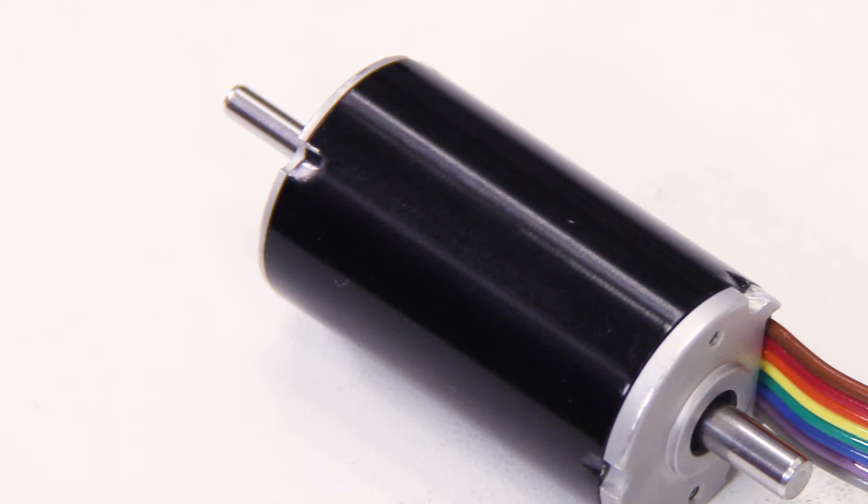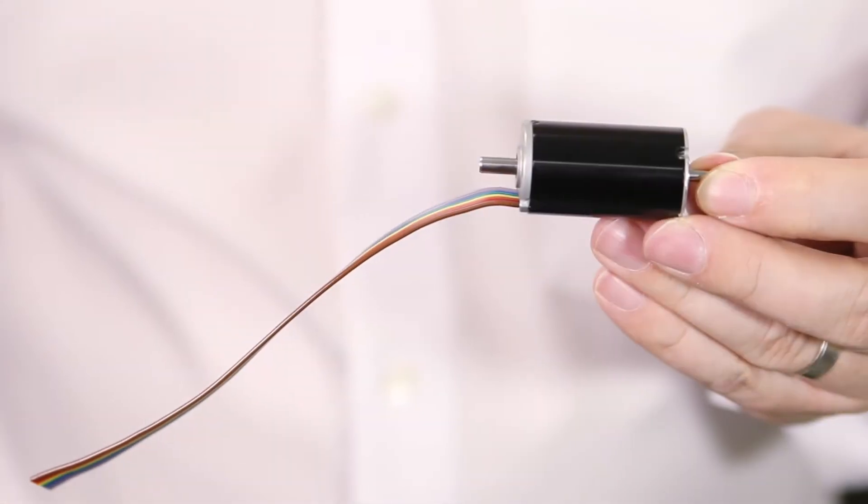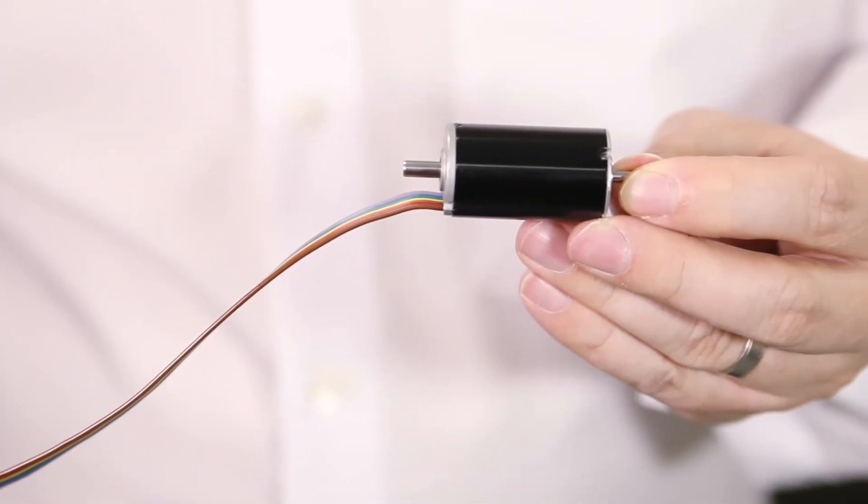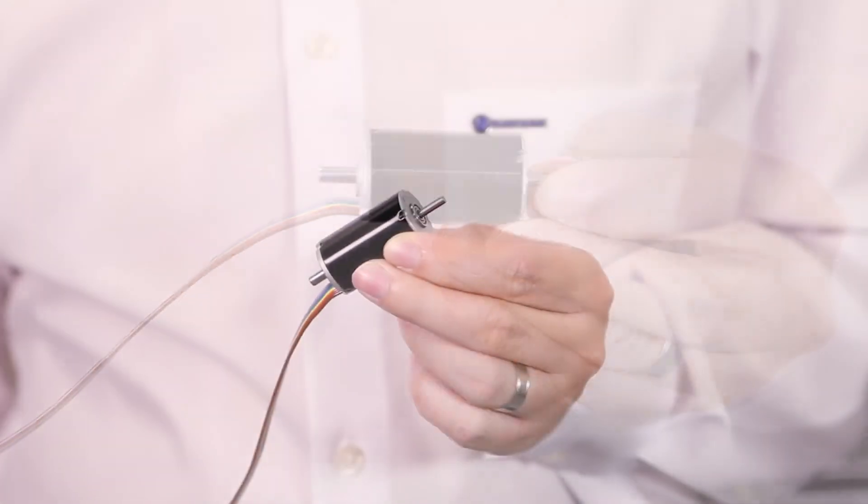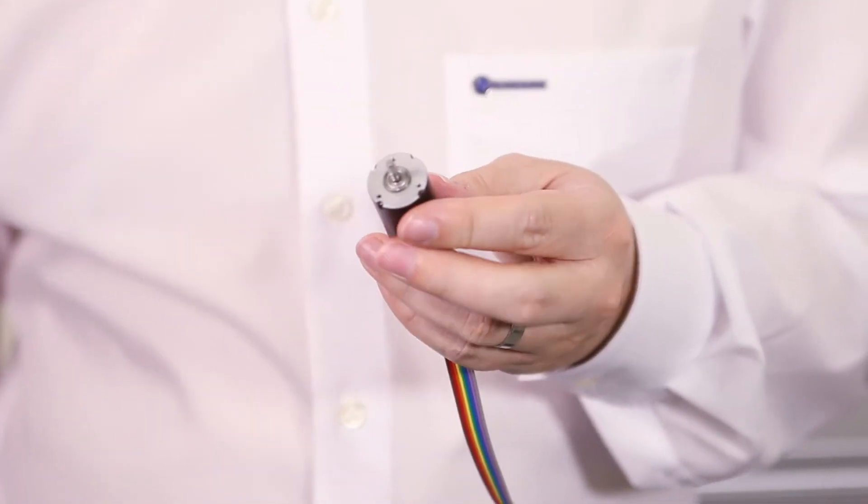The BGA22 is available with optional magnetic or optical encoders, up to three-stage planetary gearbox and an external drive for easy operation.